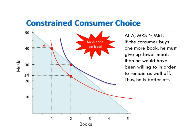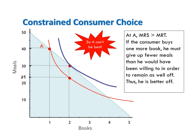What does that mean? According to this consumer's preferences, starting at bundle A consuming one book and 40 meals, this consumer would be willing to give up 16 meals in order to purchase the second book. But according to her budget line, when she buys the second book she only needs to give up 10 meals. She's willing to pay 16 meals for the second book, but the market only charges 10 meals, so that second book is cheaper than she was willing to pay — meaning she can buy it and be better off, moving her to a higher indifference curve.